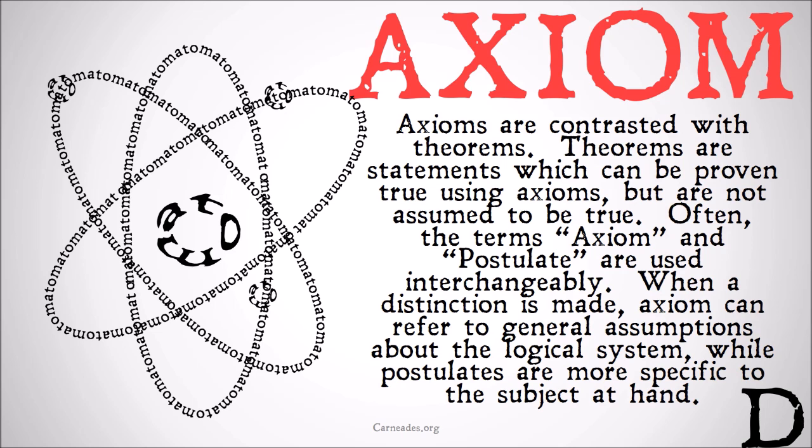Axioms are contrasted usually with theorems. Theorems are statements which can be proven true using axioms, but are not assumed to be true. So you take things that you assume to be true — things everyone accepts — and you use those logical truths to go on and prove theorems.